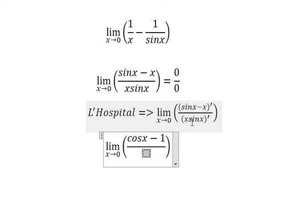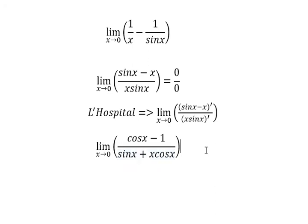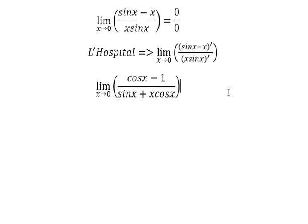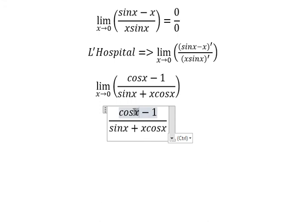Here we apply the product rule. X goes first so we get sinx, then we do the first derivative of sinx so we get x cosx. Now we can put zero in here.